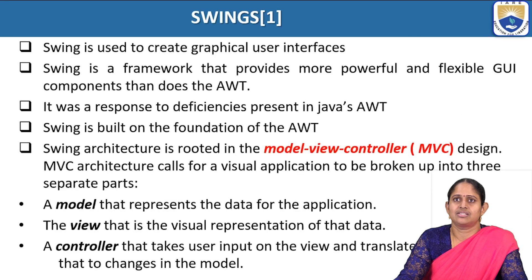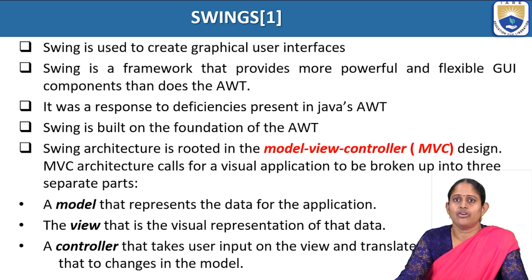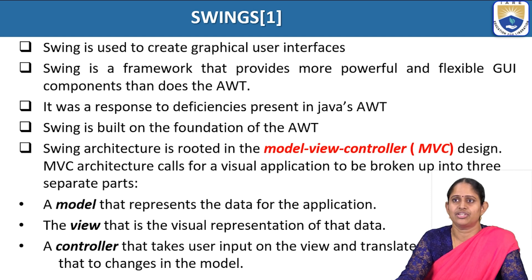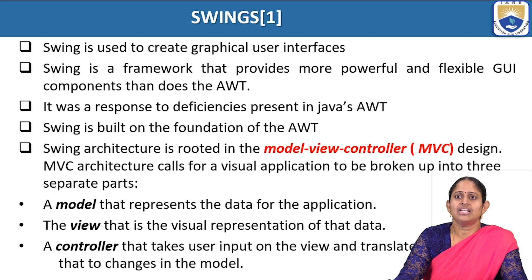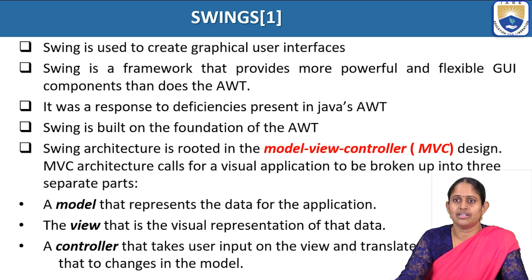Because of the disadvantages of AWT they came up with Swing, which is also used to create graphical user interfaces. It is a framework that provides more powerful and flexible GUI components than AWT, and is built on the foundation of AWT. It is rooted in the Model View Controller design — the MVC architecture — which calls for a visual application to be broken into three separate parts: the Model, which represents the data; the View, the visual representation of that data; and the Controller, which takes user input on the View and translates that to changes in the Model.